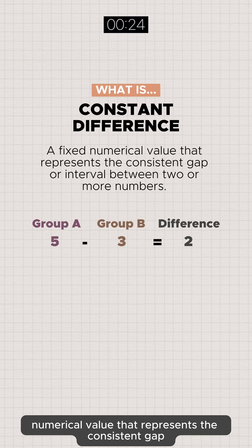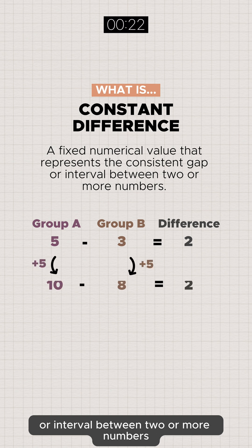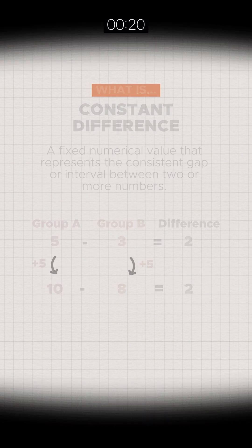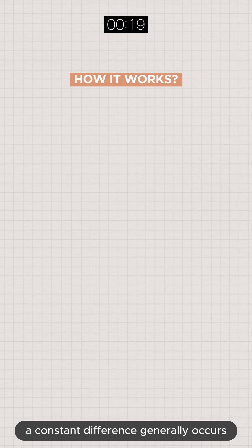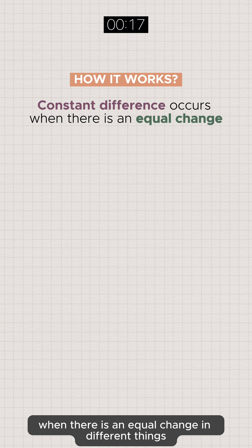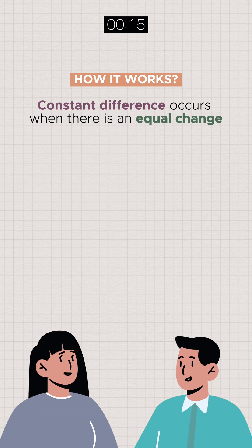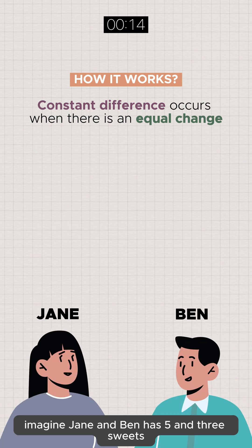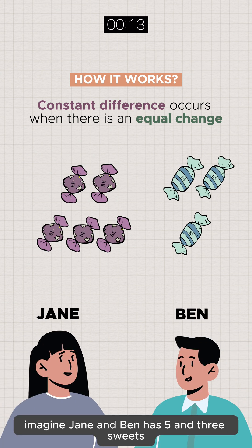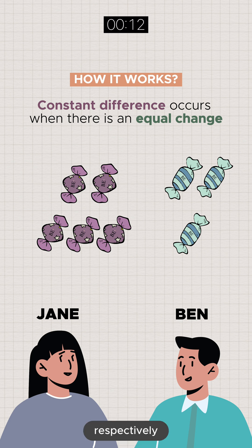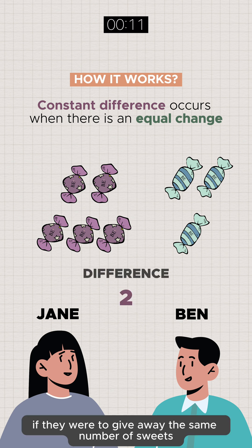A constant difference, on the other hand, is a fixed numerical value that represents the consistent gap or interval between two or more numbers. A constant difference generally occurs when there is an equal change in different things. Imagine Jane and Ben have five and three sweets respectively.